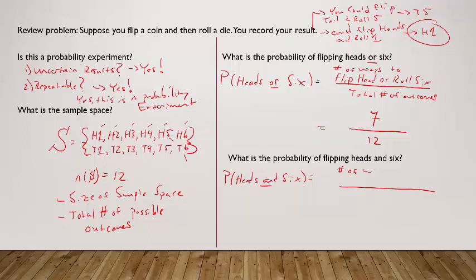All right, so just using this classical definition, it's the number of ways to flip heads and roll six—so the and statement means you need to have both—and then divided by the total number of outcomes.